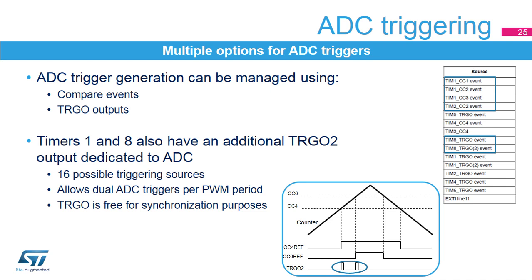The TRGO gives extra flexibility, since it can be any of the compare events or timer internal control signals such as register update, counter reset, or trigger input. However, this prevents the TRGO from being used for synchronization purposes. For this reason, timers 1 and 8 also have an additional TRGO2 output fully devoted to ADC triggering, offering 16 possibilities including the six compare events and the possibility to have a dual trigger per PWM period by combining the compare 4 and 6 events.